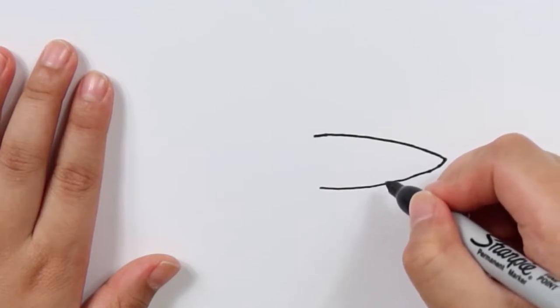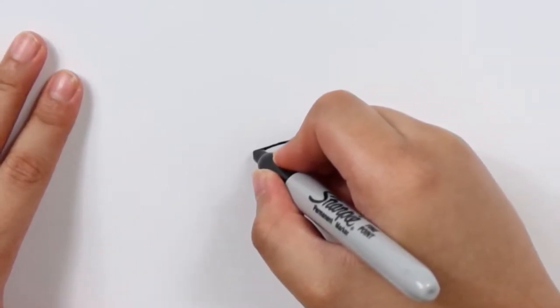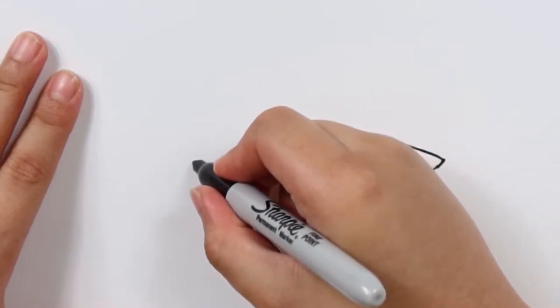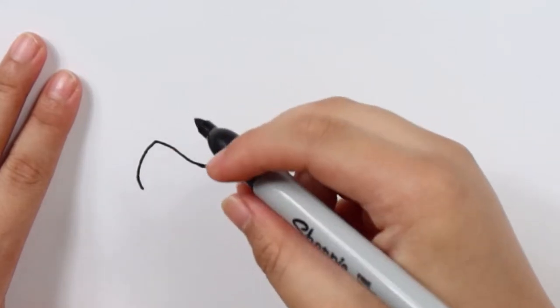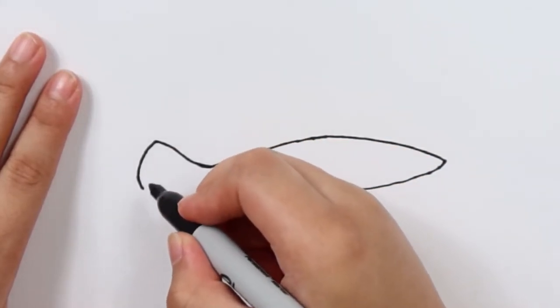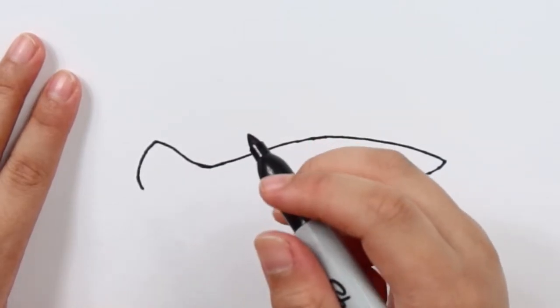You keep going down and then you curve up and you do kind of a C shape. It's not actually a C. You don't want to do anything here yet, come back to that.